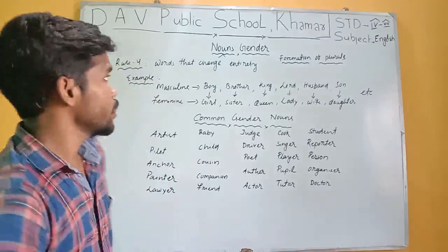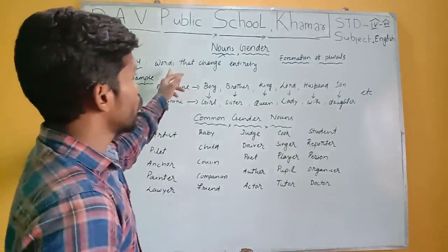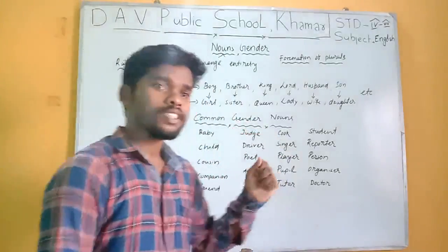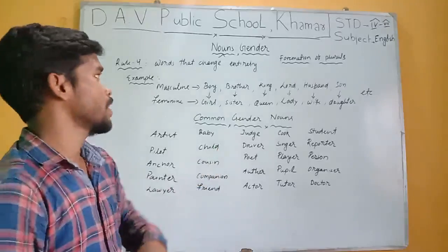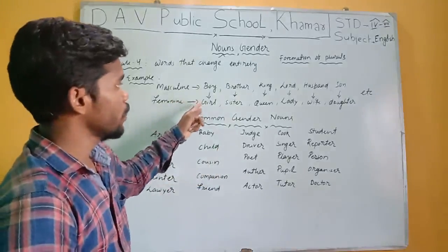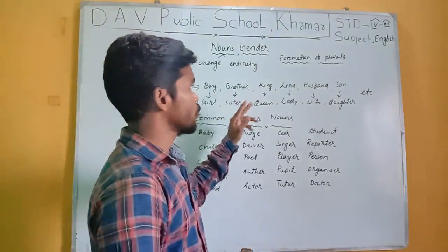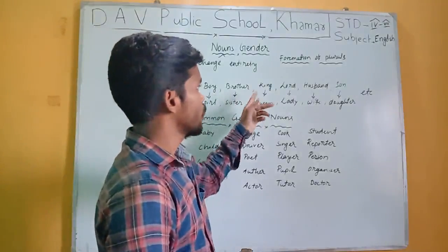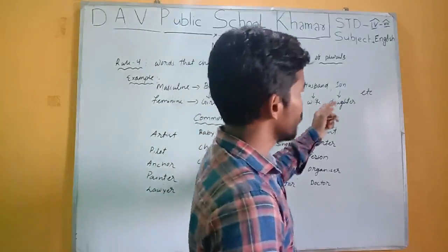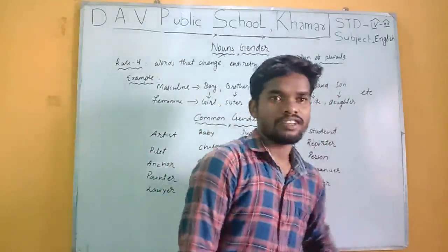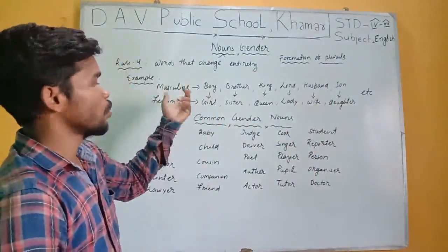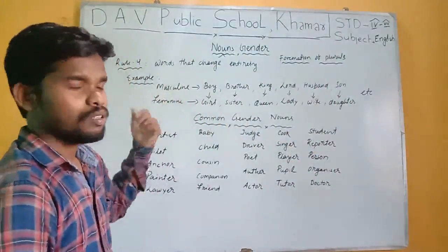The next rule is that some words change entirely to change from masculine to feminine gender. For example: boy → girl, brother → sister, king → queen, lord → lady, husband → wife, son → daughter. In this way we can change masculine gender to feminine gender.